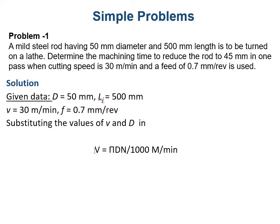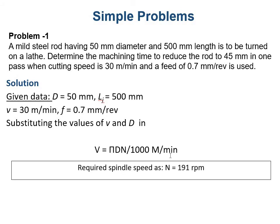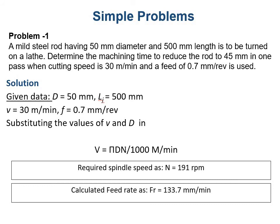As we know, cutting speed can be determined by V = πDN/1000 meter per minute. Substituting the values of V and D, we get the required spindle speed as N = 191 RPM. The cutting speed was given, and we calculate the number of revolutions per minute.